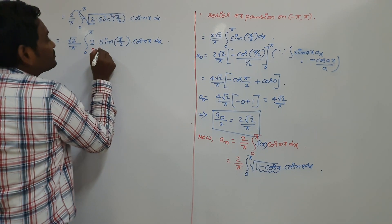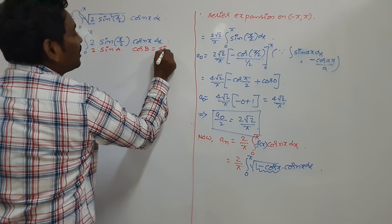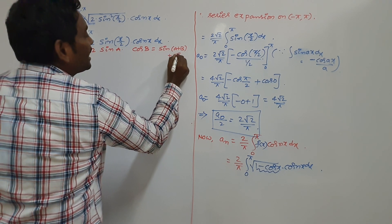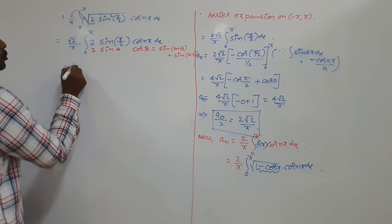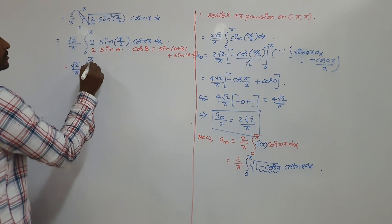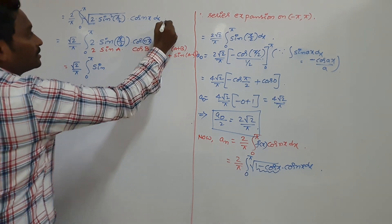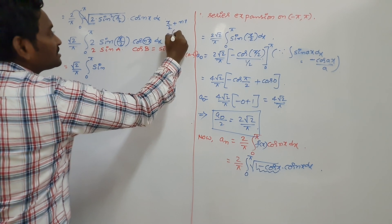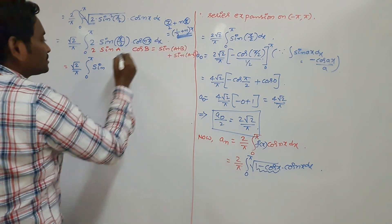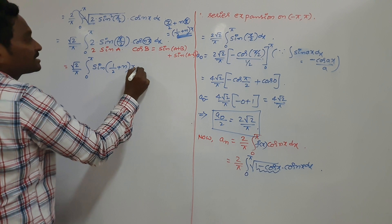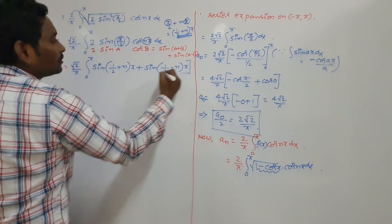So we apply the trigonometric transformation formula: 2 sin A cos B equals sin of A plus B plus sin of A minus B. According to this rule, taking root 2 outside, the expression becomes root 2 by pi times integral 0 to pi of sin of x by 2 plus n x plus sin of x by 2 minus n x dx. This can be written as sin of one-half plus n whole into x plus sin of one-half minus n whole into x dx.